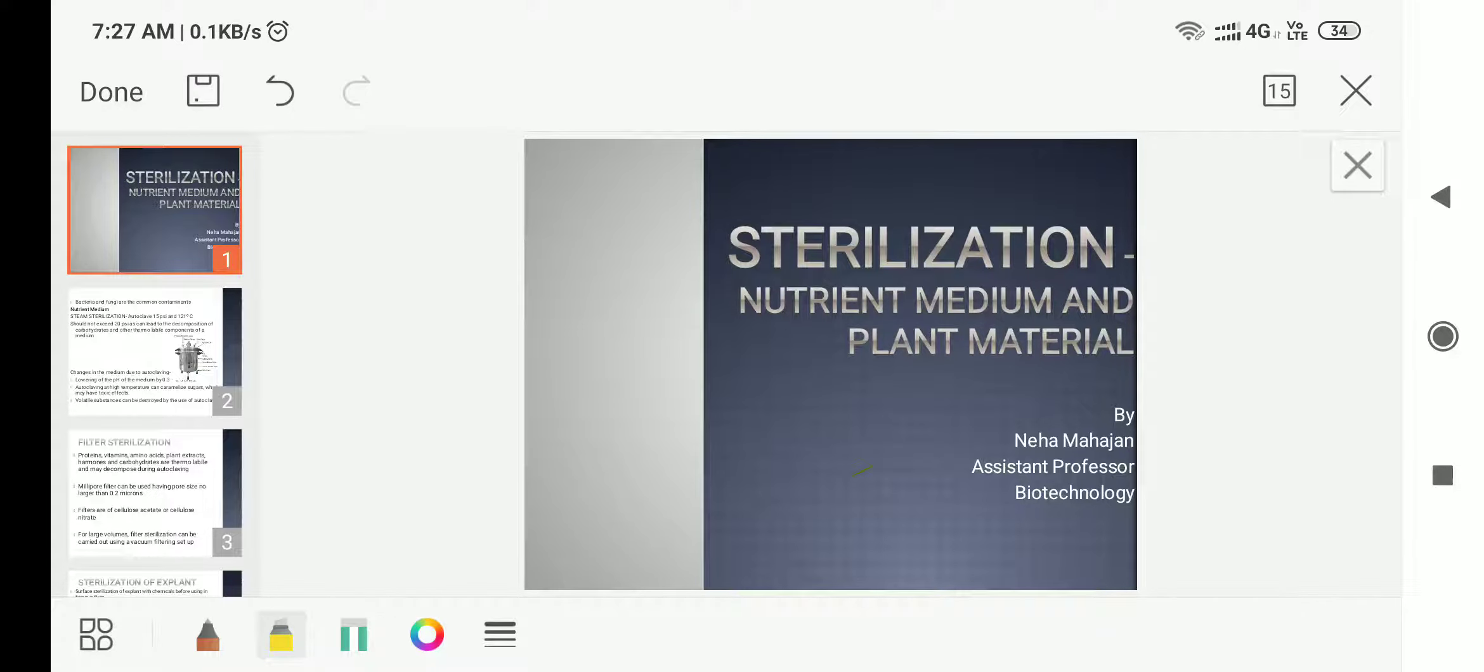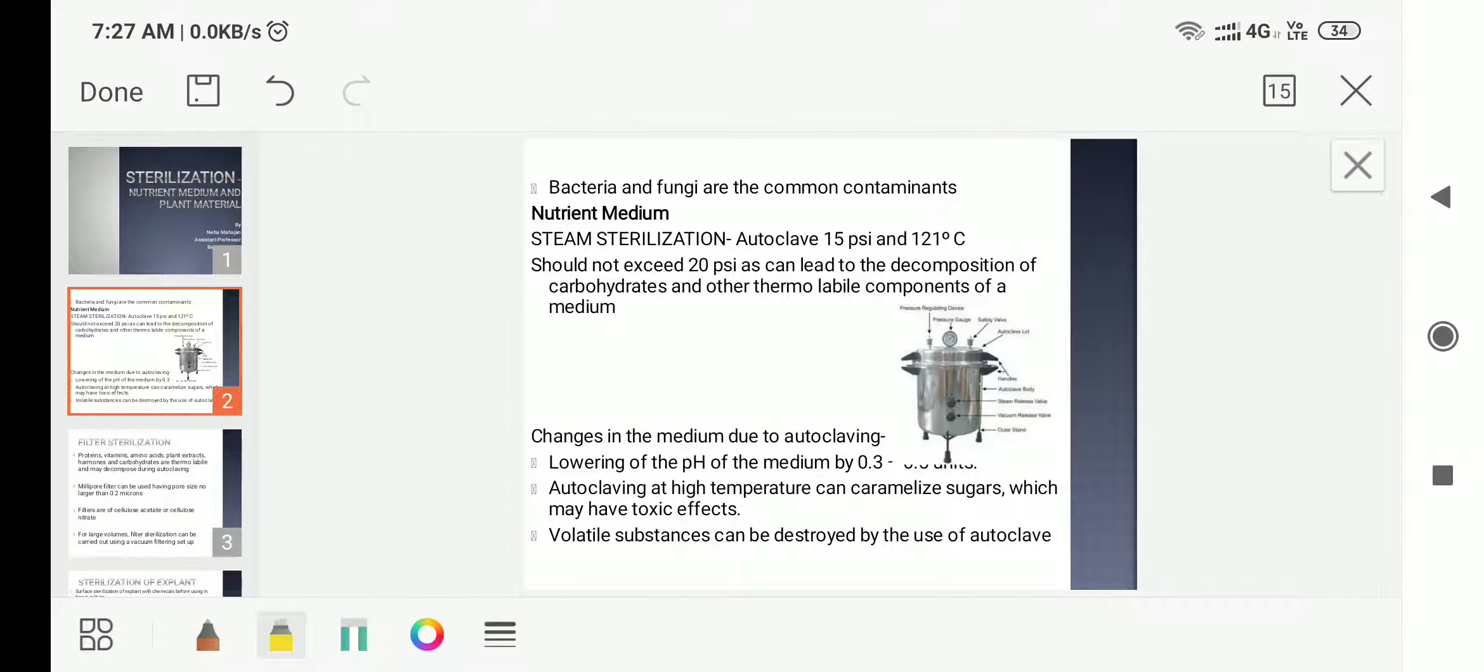Welcome, dear students. In today's lecture we will study sterilization of the nutrient medium and plant material. For plant tissue culture, we require culture medium and explant. That culture medium and explant should be sterile, otherwise the contaminants will overgrow the plant material. The main contaminants seen in the culture medium and on the surface of plant material are bacteria and fungus.